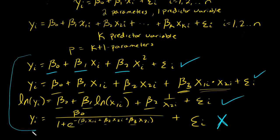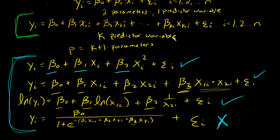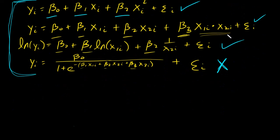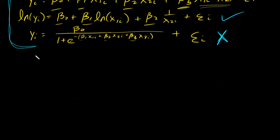It's important we understand what it means to be linear: it means linear in beta, not linear in x, not linear in y. Writing the full model expression out like this is time consuming, so what we do is use matrix notation. We're going to rewrite this model using matrix notation and then we'll probably never write it out the long way again.